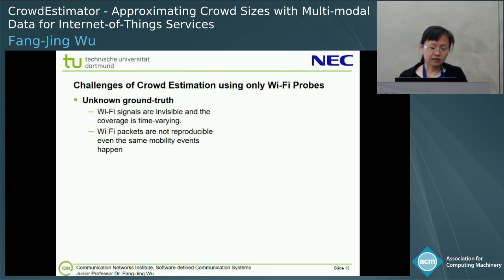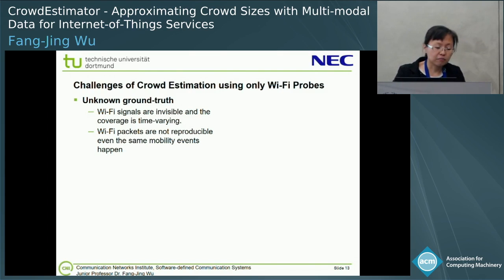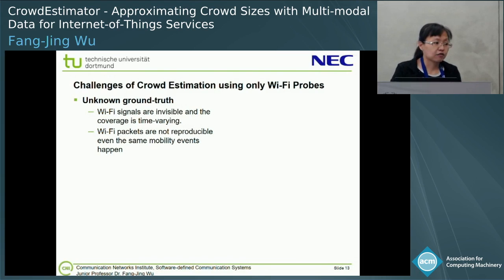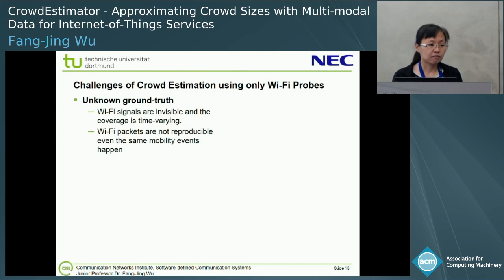The challenges for cloud estimation using Wi-Fi probe: the first challenge is that the ground truth is not available. The ground truth is unknown because the Wi-Fi coverage is invisible, so we couldn't count how many devices are in the Wi-Fi range. The Wi-Fi signal is time-varying, so we couldn't know the actual boundary, the actual coverage of the Wi-Fi sensing range. Also, Wi-Fi packets couldn't be reproduced because there are many uncertainties — for example, if I move outside the room and come back making the same movement, the Wi-Fi sniffer couldn't capture the same Wi-Fi packet.